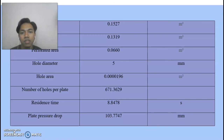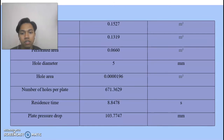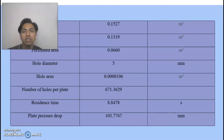Net area is 0.15727 square meters and active area is 0.1319 square meters. Perforated area is 0.0660 square meters. Hole diameter is 5 millimeters. Hole area is 0.000196 square meters, which is quite small. Number of holes per plate is 671.3629. Resident time is 8.847 seconds. Plate pressure drop is 1037.747 millimeters. The full explanation has been stated in our report for more detail.